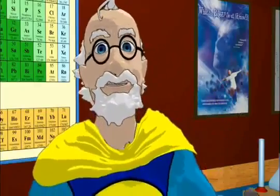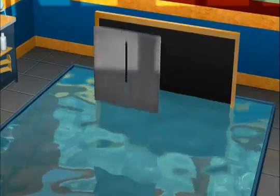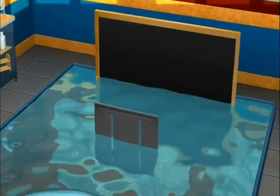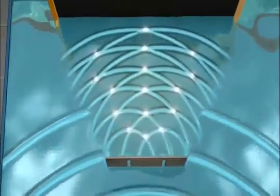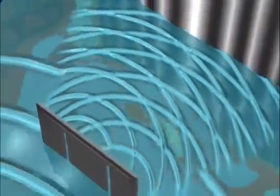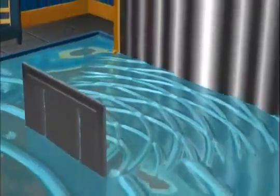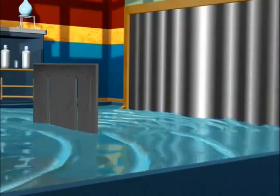But when we add the second slit, something different happens. If the top of one wave meets the bottom of another wave, they cancel each other out. So now, there is an interference pattern on the back wall. Places where the two tops meet are the highest intensity, the bright lines, and where they cancel, there is nothing.